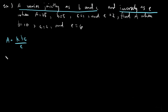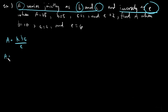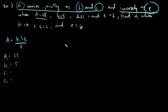Let's write the formula equation immediately. A varies jointly as B and C — jointly is direct variation, so B and C are above. Inversely as E, so E is below: A = k times B times C divided by E. Our variables are A, B, C, and E. First set: A sub 1 is 25, B sub 1 is 5, C sub 1 is 1, and E sub 1 is 2.